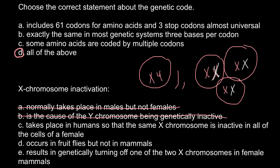One of the two X chromosomes would be turned on and the other turned off, but both cannot be turned off simultaneously — so we can cross out answer C. Answer D states it occurs in fruit flies but not in mammals, which is not true; it happens in all mammals, so we cross out that answer. Answer E states it results in genetically turning off one of the X chromosomes in female mammals, and this is true. It is a random process, so in some cells one X chromosome can be turned off — for example one derived from the mother's side — and in other cells it can be the one derived from the father's side.